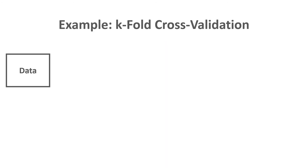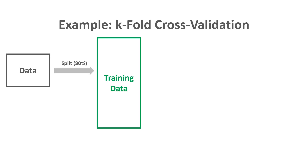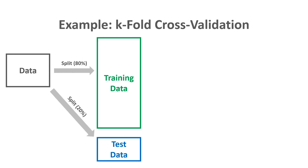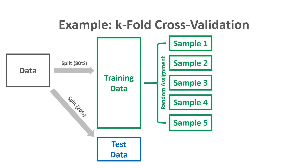Here's a specific example: we start with 1,000 cases and do an 80/20 random split. That means 800 cases go to the training data and 200 cases go to the test data. We then create five subsamples — subsamples 1, 2, 3, 4, and 5 — randomly assigned from the training data.